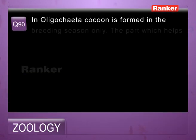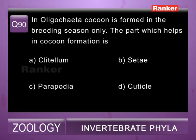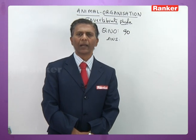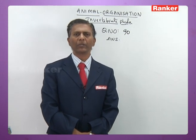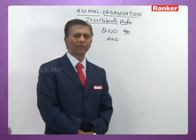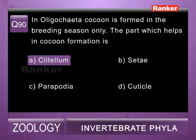Question ninety: in Oligochaeta, cocoon is formed in the breeding season. The part that helps in cocoon formation is — a) clitellum, b) setae, c) parapodia, d) cuticle. In all oligochaetes, clitellum or singulum gives rise to cocoon during breeding season. So the answer for ninetieth question is a) clitellum.